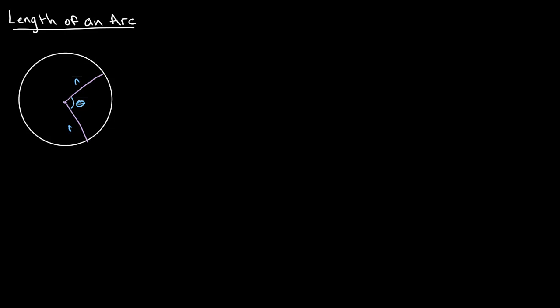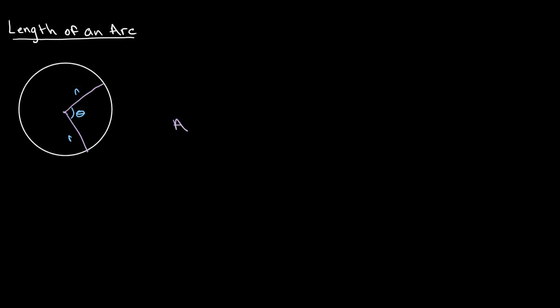To find the length of an arc, we simply use an equation which states that arc length is equal to r times theta. This means that our arc length, or this portion of our curve, is equal to r, the radius of our circle, multiplied by theta, which is the angle of our sector.